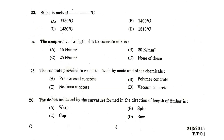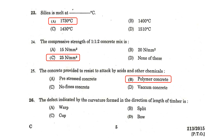Silica melts at 1730 degrees Celsius. The compressive strength of 1:1:2 concrete mix is 25 N per mm square at 28 days. The concrete provided to resist the attack by acids and other chemicals is polymer concrete.